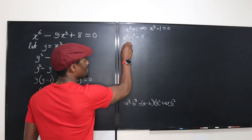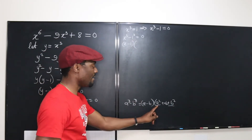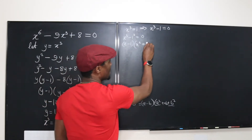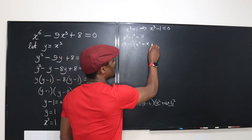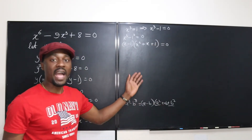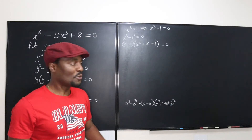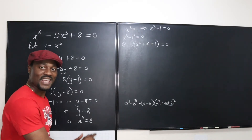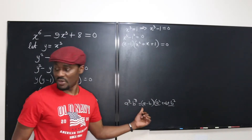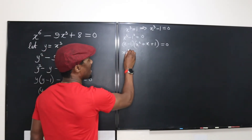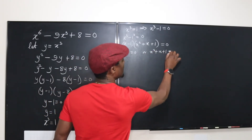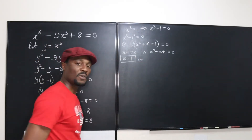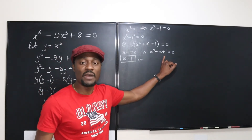Applying the formula: a minus b gives x minus 1. Then a squared is x squared, plus the product of the two terms which is x times 1, giving plus x. Then the square of the second term is 1 squared, giving plus 1. So we have (x minus 1)(x squared plus x plus 1) equals zero. From this, x minus 1 equals zero gives x equals 1. Or we have to solve the quadratic equation x squared plus x plus 1 equals zero, which cannot be factored, so we use the quadratic formula.